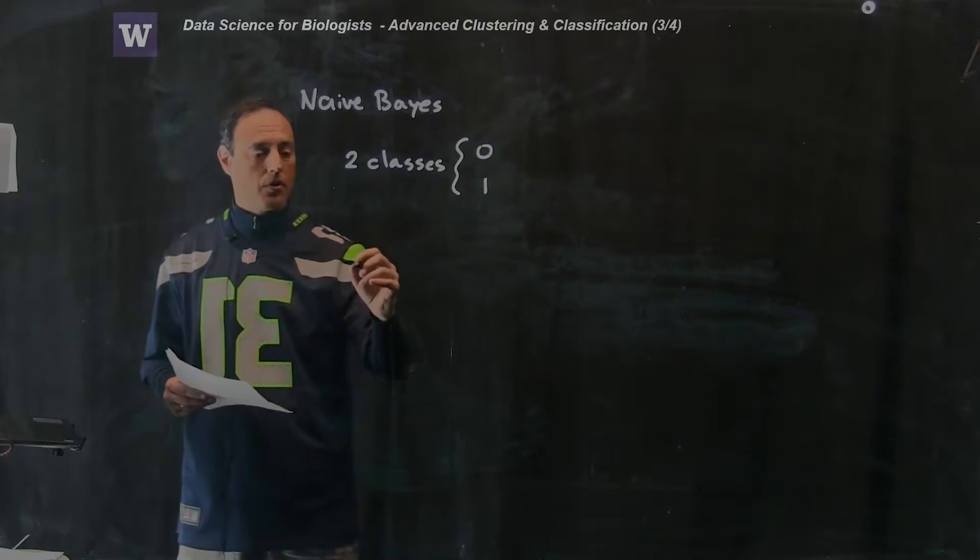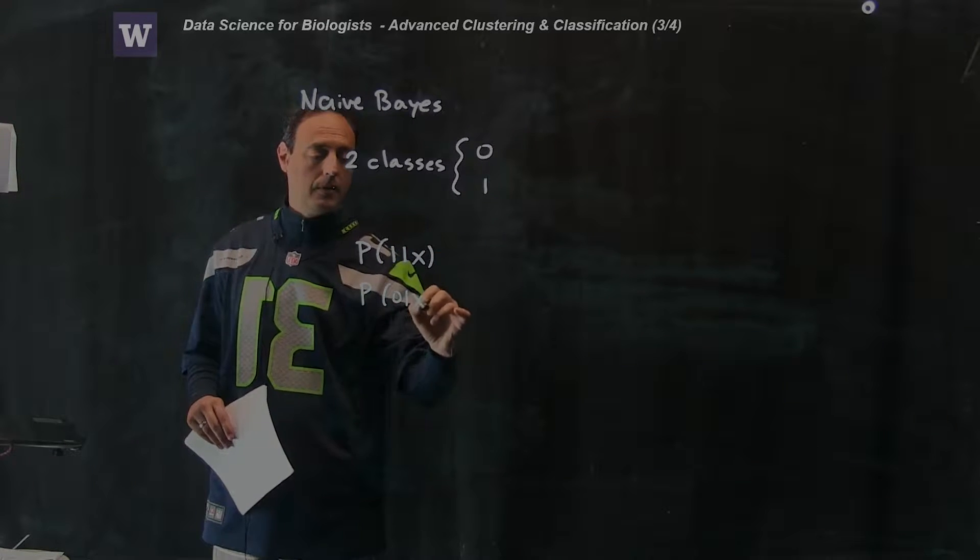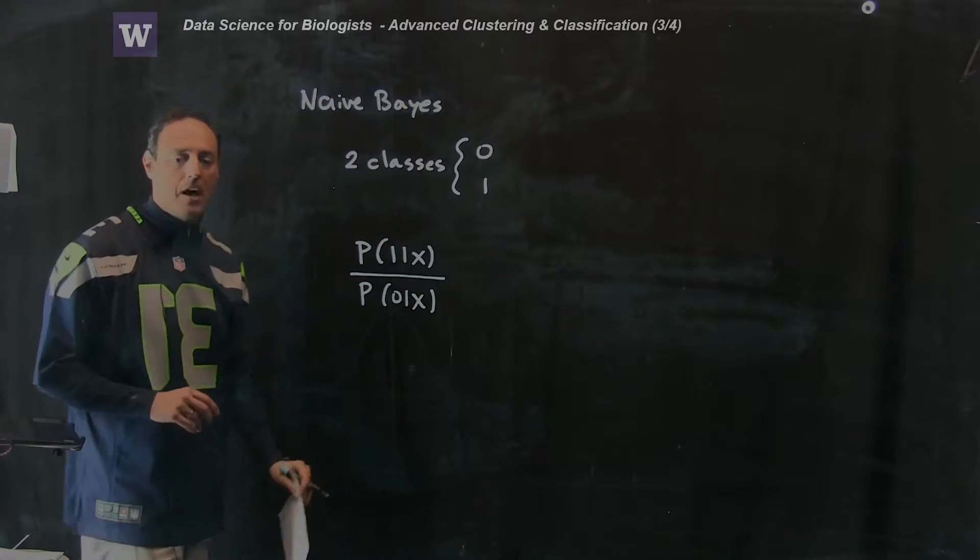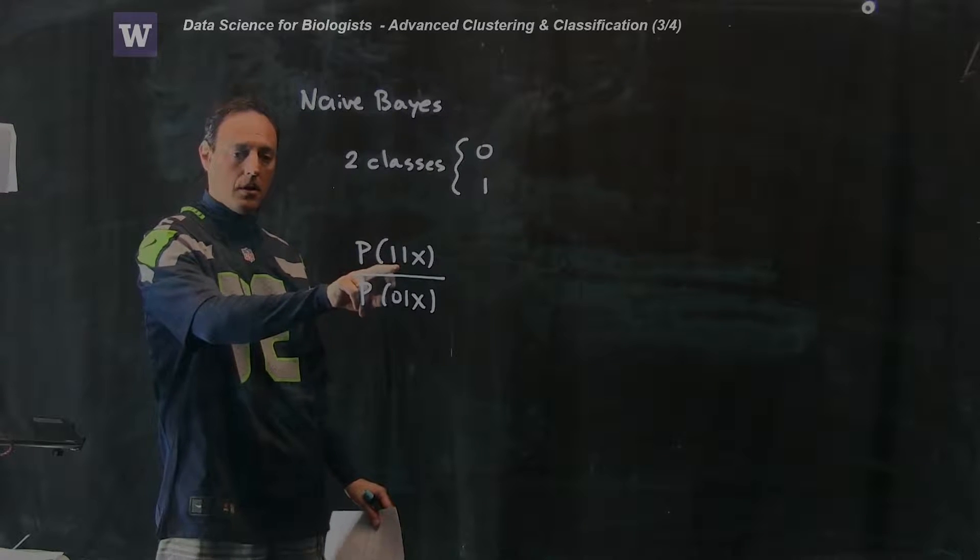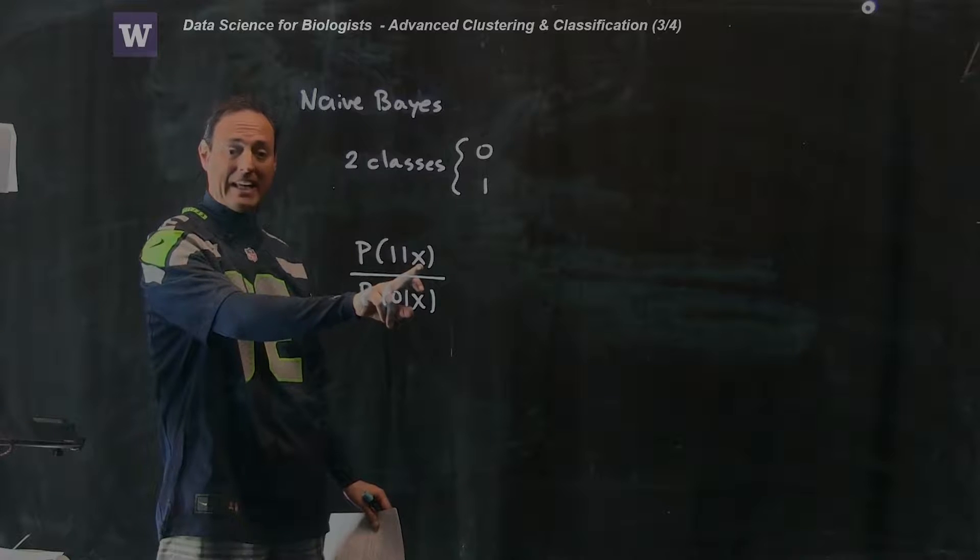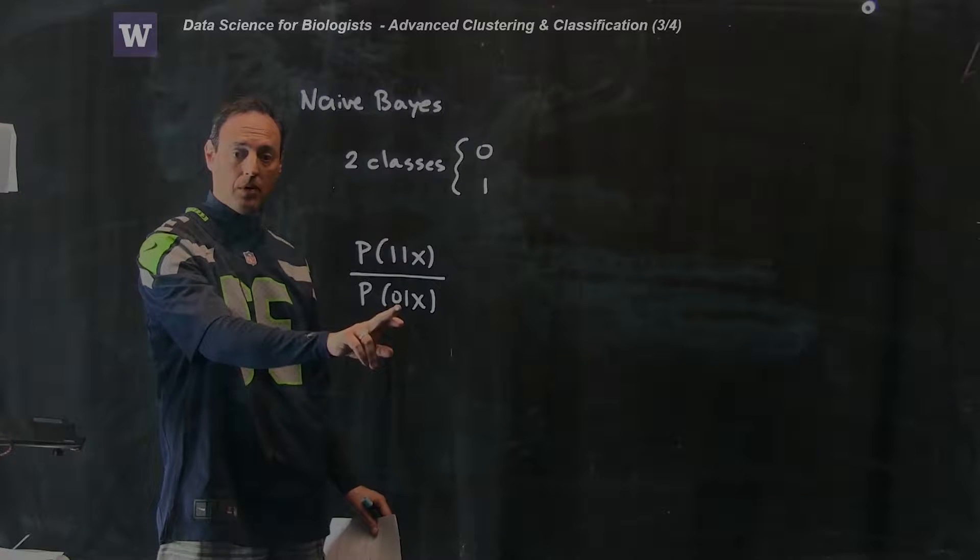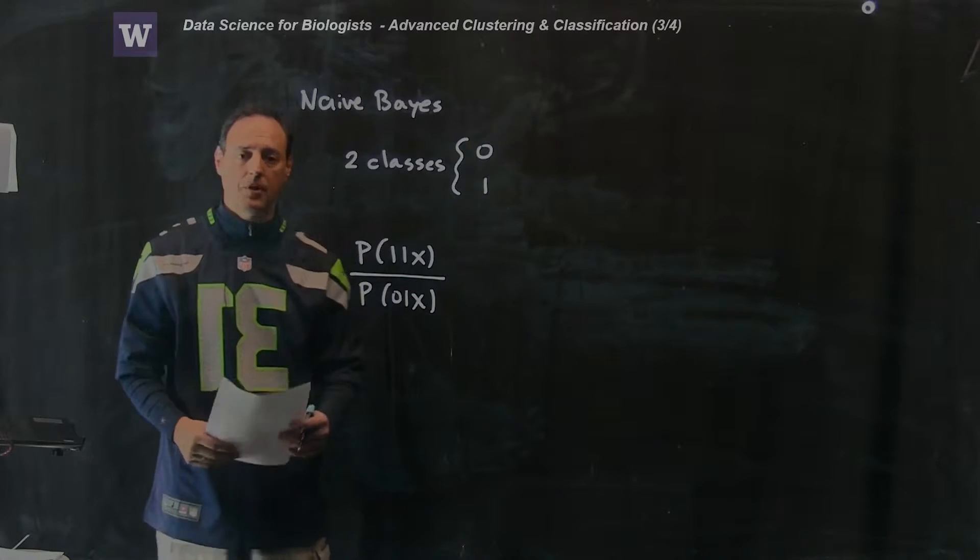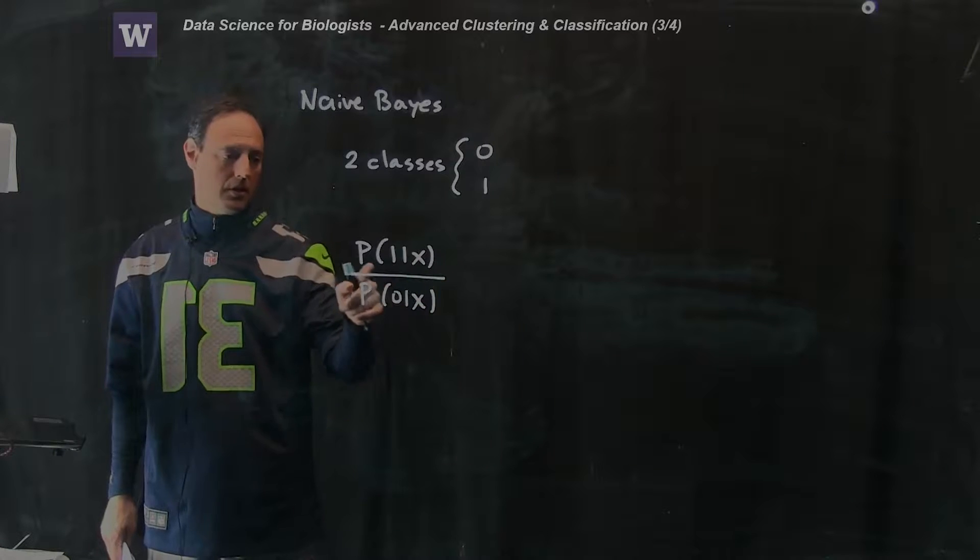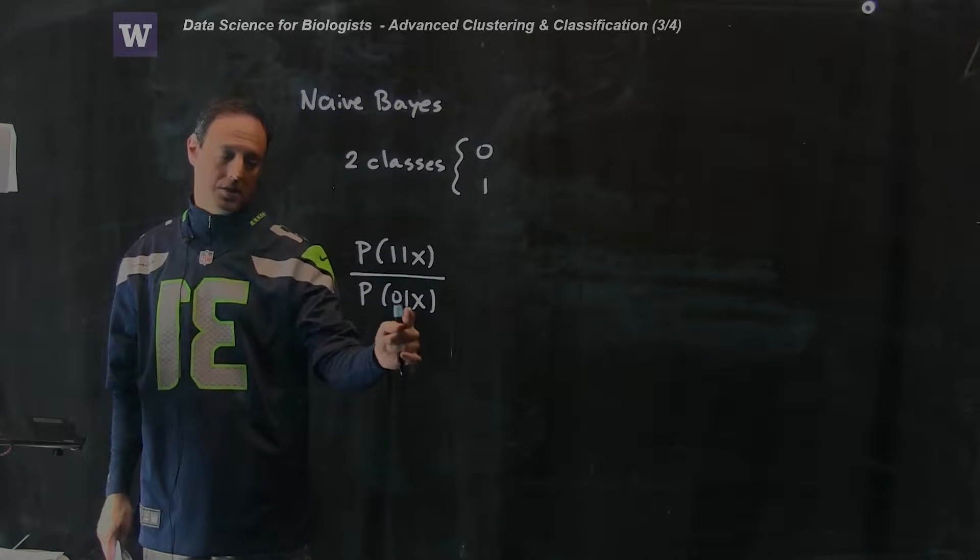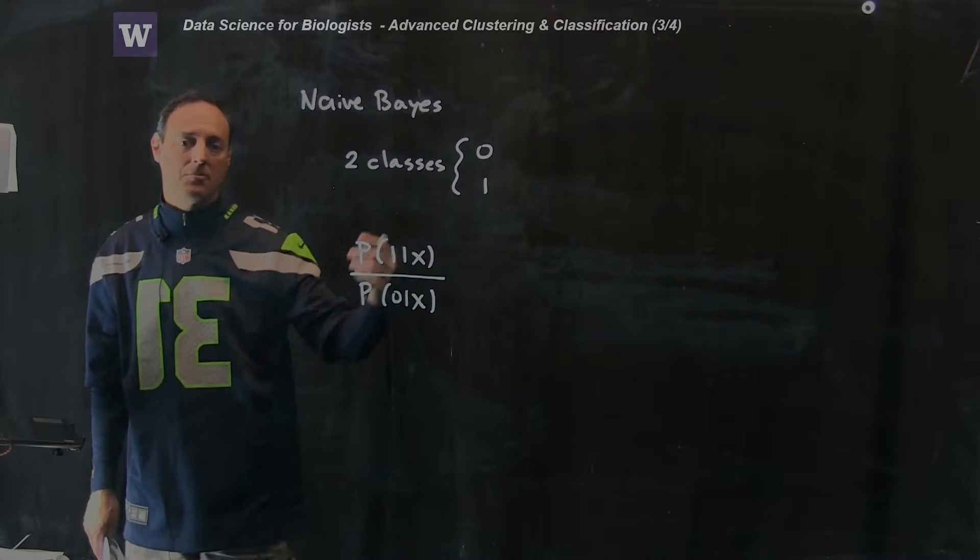I'm going to construct a score using conditional probabilities. I'm going to construct the following ratio: what is the probability of having class 1 given the data x versus what is the probability of being class 0 given x. So if you're near cluster 1, this here will be near 1, and this here will be very close to 0. Something near 1, something close to 0, you're dividing by something very small, this becomes a very big number.